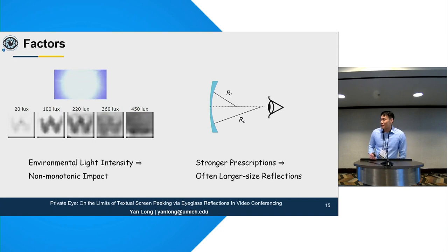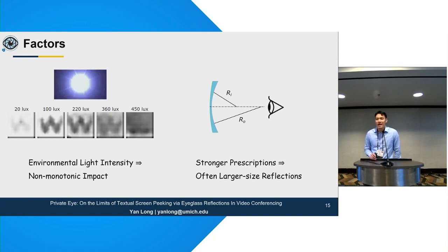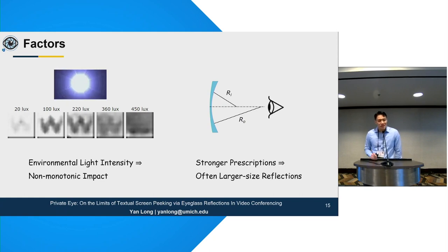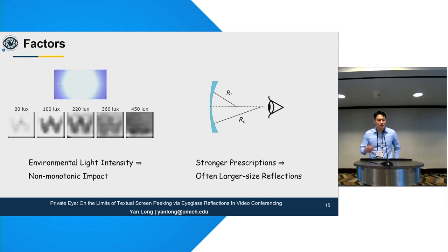There are some interesting factors worth pointing out. The lighting condition in the room can affect reflection quality non-monotonically: as light intensity increases, reflections get clearer at first and then decrease in quality, due to the auto-exposure controls in most modern webcams. Also interestingly, stronger prescription glasses sometimes leak more information because they have flatter surfaces, leading to larger pixel resolution captured by the webcam. So this is kind of bad news for people like me.